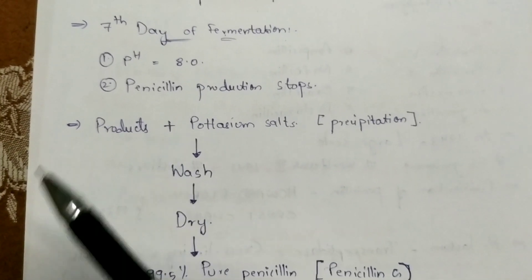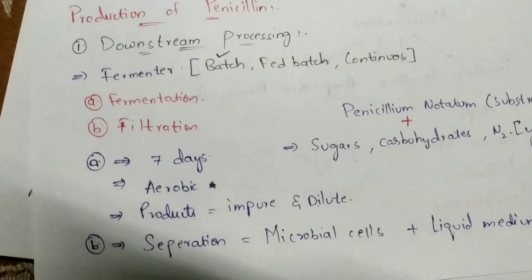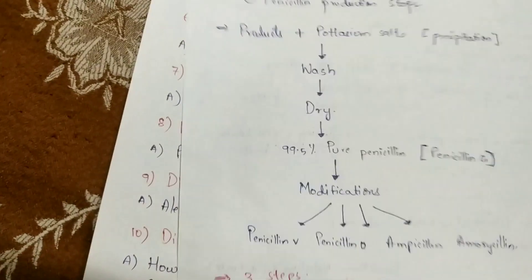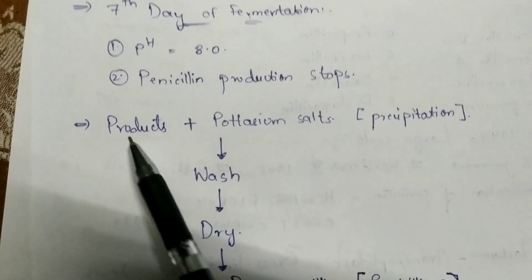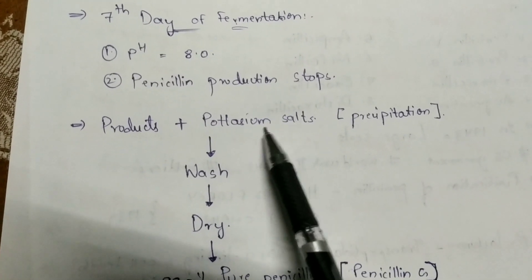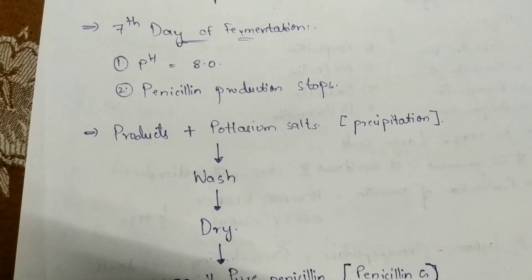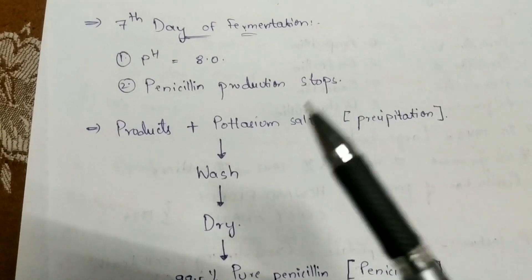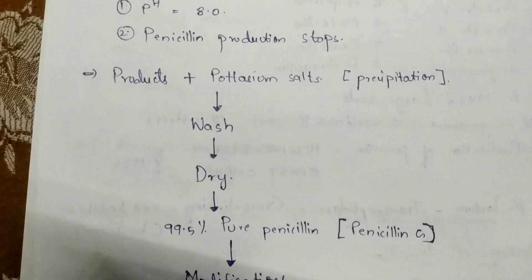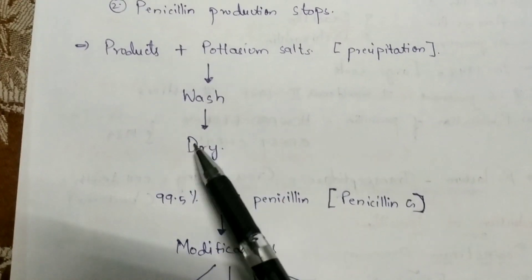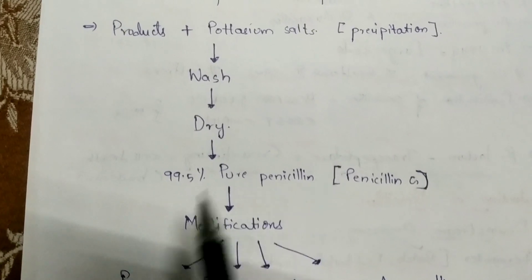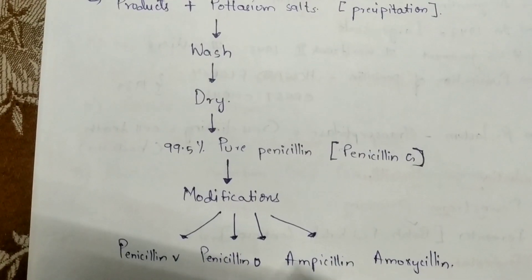The products formed are microbial cells and liquid medium. The microbial cells combine with potassium salts and precipitation takes place. The product gets washed properly and immediately after washing it gets dried in containers. After drying, the final product is 99.5% pure penicillin, and the type of penicillin formed is Penicillin G.